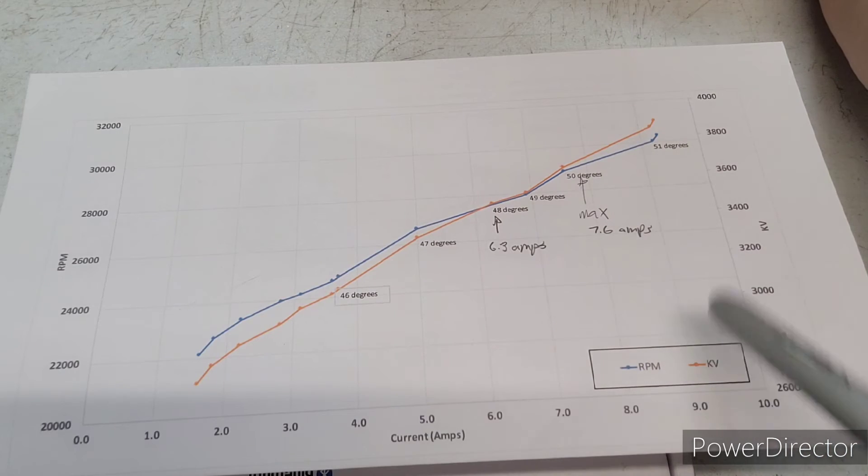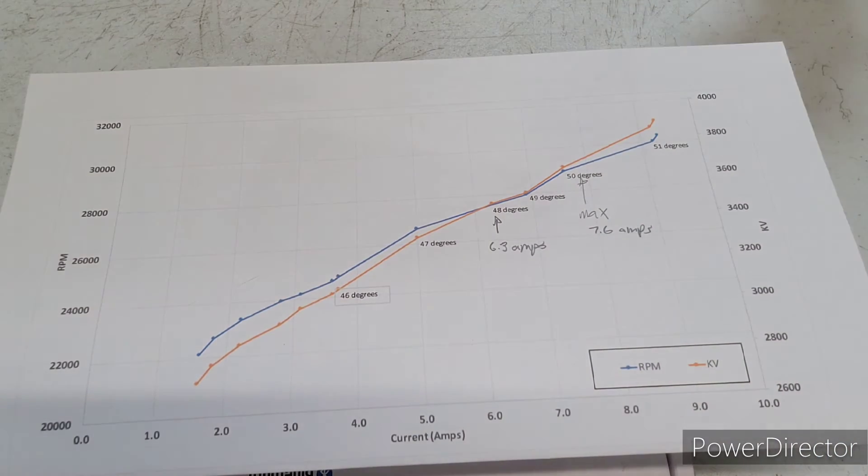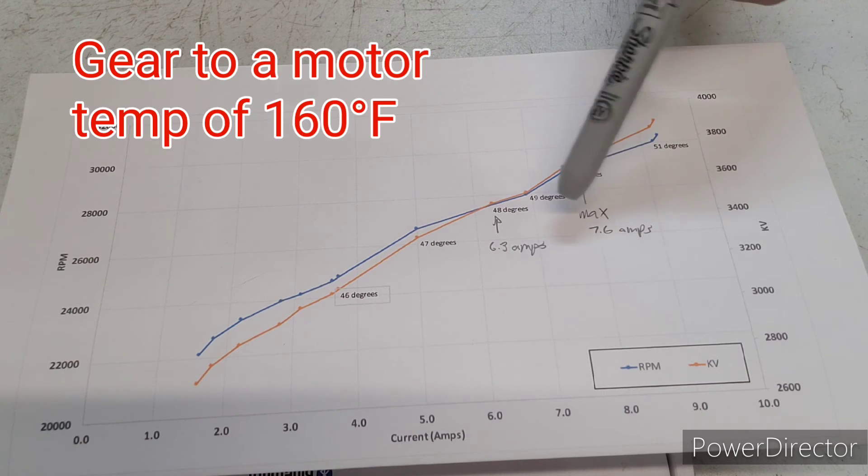So out here you're over nine amps. And so keeping the rule of thumb of six amps in mind, you definitely would never want to go out here in the nine amp region. This motor was actually more linear than most motors. But I would say for me, the max would be this 50 degrees running at 7.6 amps. You would definitely need a fan and you'd have to gear appropriately and really watch the temperature here.